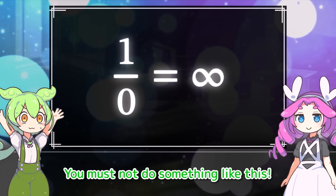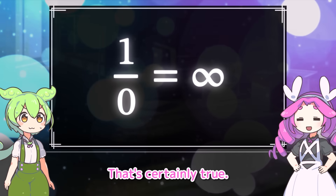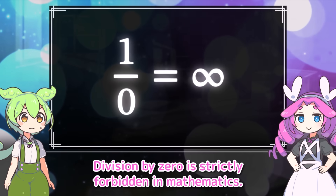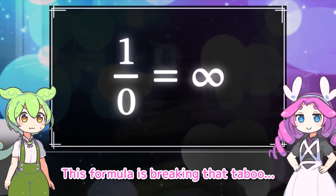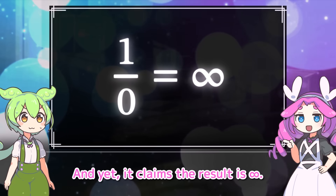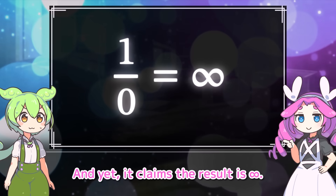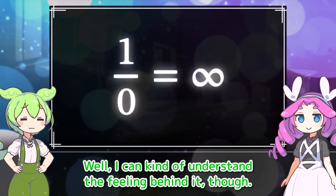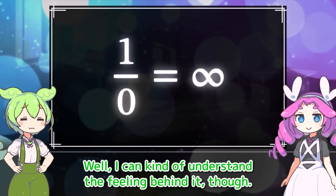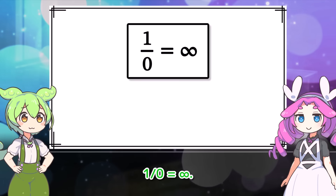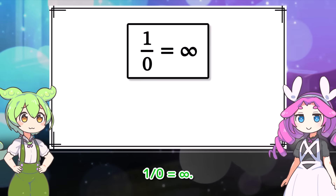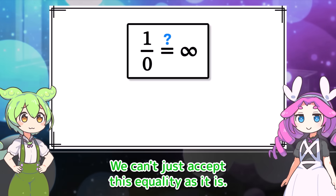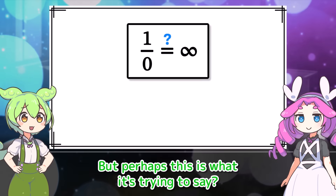You must not do something like this. Division by 0 is strictly forbidden in mathematics. This formula is breaking that taboo, and yet it claims the result is infinity. What an outrageous equality. Well, I can kind of understand the feeling behind it, though — 1 over 0 equals infinity. But we can't just accept this equality as it is.